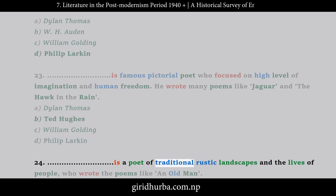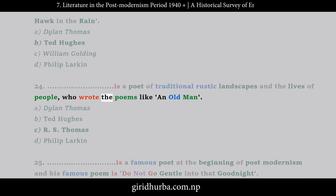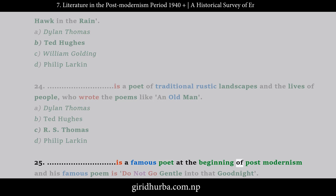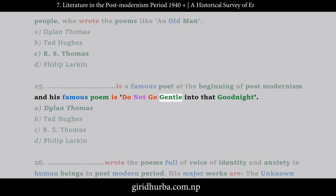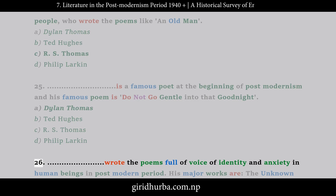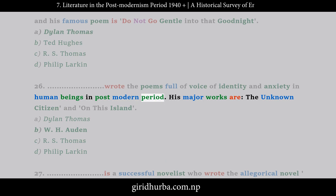Question 24: Who is a poet of traditional rustic landscapes and the lives of people, who wrote poems like An Old Man? Question 25: Who is a famous poet who wrote poems like — [answer: A. Philip Larkin]. Question 26: Whose major works are The Unknown Citizen and On This Island?